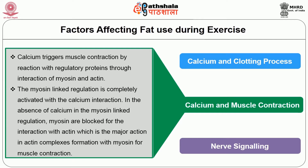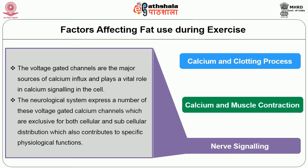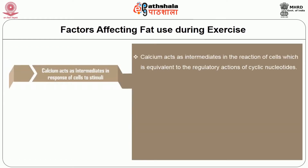In the absence of calcium in myosin-linked regulation, myosin blocks the interaction with actin, which is the major action preventing actin-myosin complex formation for muscle contraction. The next function is nerve signaling. Voltage-gated channels are the major source of calcium influx and play a vital role in calcium signaling in the cell. The neurological system expresses a number of these voltage-gated calcium channels, with both cellular and subcellular distribution, contributing to specific physiological functions. Calcium also acts as an intermediate in response of cells to stimuli.